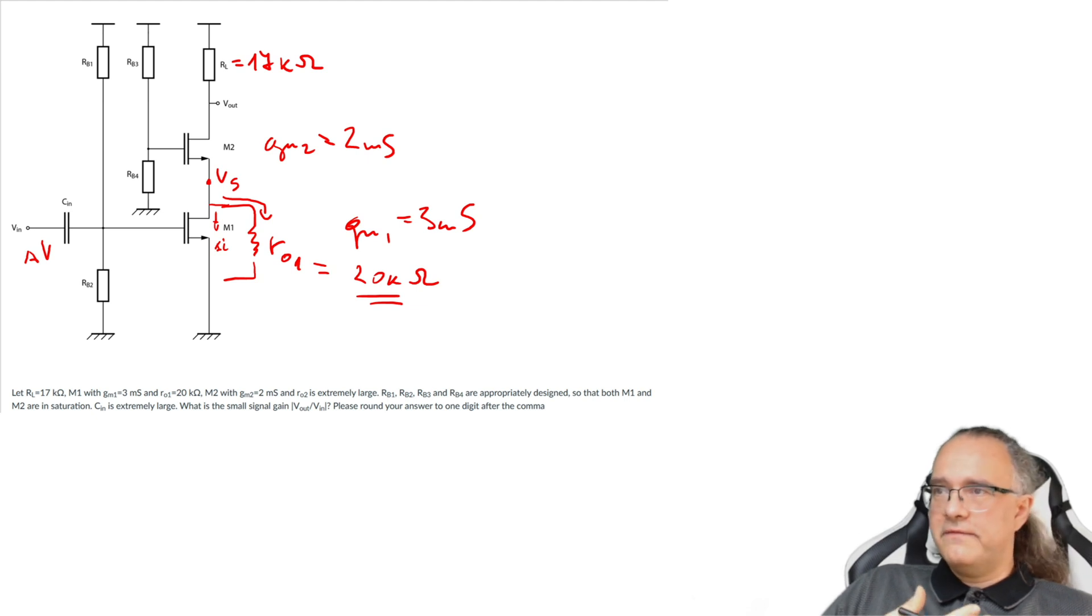We can find out by drawing the small signal equivalent model of this circuit. Now in small signal we start with the most important component which is M1. We draw it with its voltage dependent current source. So this is the source. It goes to ground and its value is GM1·VGS1 and that VGS1 is VIN small signal.